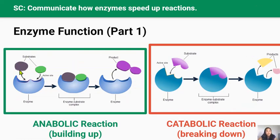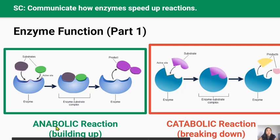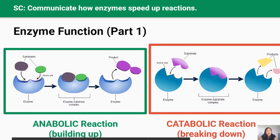So how do enzymes work? When a substrate binds to an enzyme's active site, it undergoes various chemical reactions, resulting in the enzyme forming new molecules called products. There are two types of reactions: building up reactions and breaking down reactions. Building up reactions are called anabolic reactions, where an enzyme joins two or more substrates to form a bigger product. An example is during photosynthesis, when plants use enzymes to make glucose from water and carbon dioxide. Breaking down reactions are called catabolic reactions, where enzymes break large substrates into two or more smaller products. An example is when our body breaks down glucose to release energy during cellular respiration.